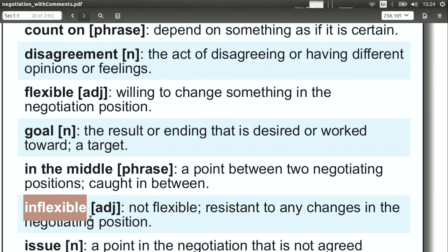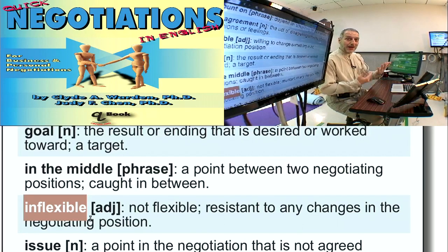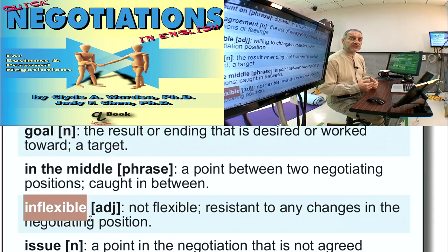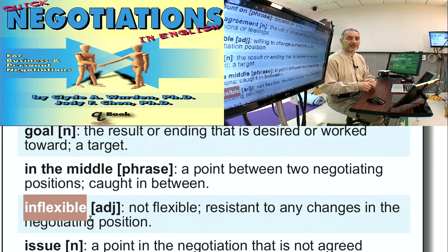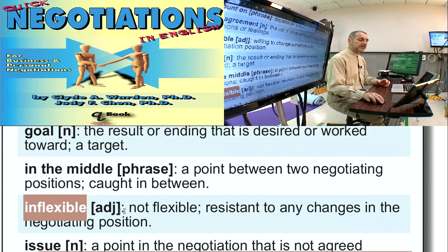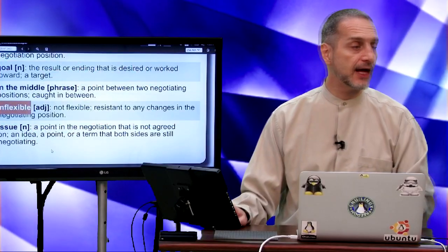Inflexible means no flexibility — it's the opposite of flexible. You would usually not say this about yourself; you'd say it about the other side: you are being inflexible, meaning you're not giving up anything in this negotiation. Usually, this word is used to show that the other side is not being helpful or not changing.